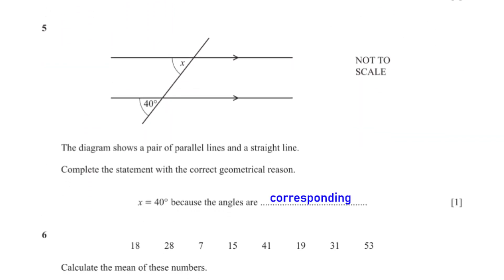The diagram shows a pair of parallel lines and a straight line. Complete the statement with the correct geometrical reason. x equals 40 degrees because the angles are corresponding.